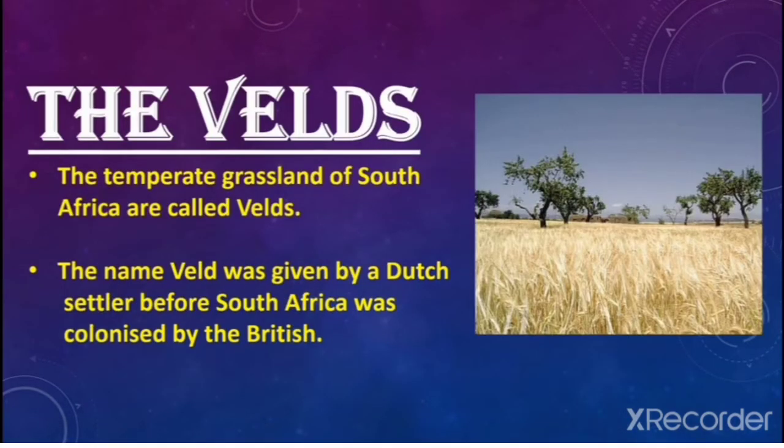Now let us study another type of temperate grassland — the velds. The temperate grasslands of South Africa are called velds. The name 'veld' was given by Dutch settlers before South Africa was colonized by the British.